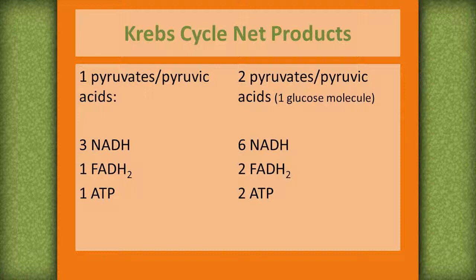Since glucose is a six-carbon molecule, it produces two pyruvates or pyruvic acids, leading to six NADHs, two FADH2s, and two ATPs for each glucose molecule.